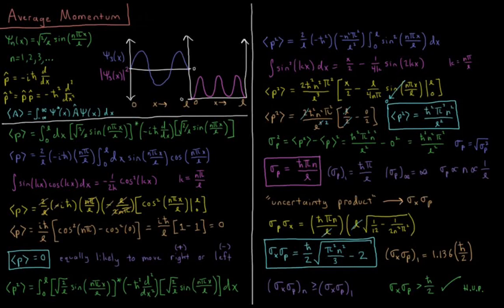In this video, we'll use what we learned in our calculation of the average position of the particle-in-a-box wavefunctions and apply it to calculating the average momentum. For the particle-in-a-box, our wavefunction has a quantum number n, which starts at 1 and goes up as an integer to infinity. The wavefunction as a function of x is the square root of 2 over l, the length of our box, times sine(nπx/l), and is only non-zero inside the box for x between 0 and l.